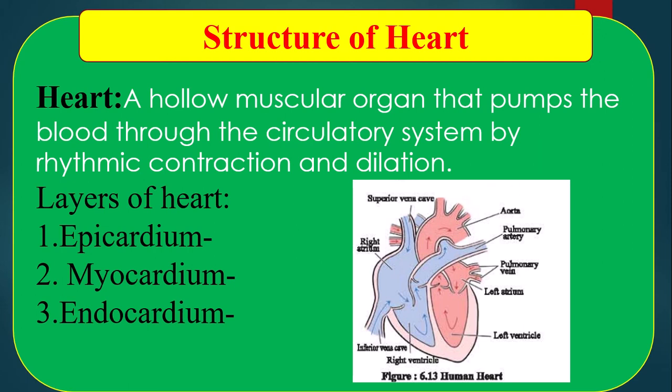The inner part of the heart is hollow and four-chambered. The upper chambers are the right and left atrium. The lower chambers are the right and left ventricle. The atria are comparatively thin-walled and wide, while the ventricle walls are muscular and thick. The two atria and ventricles are separated by the interatrial and interventricular septa.